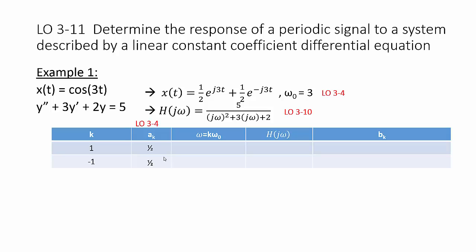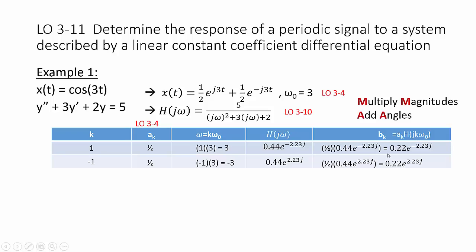This column is always through learning outcome 3.4. Our omega values are k times omega naught. We know our k values from the first column. We calculated omega naught using learning outcome 3.3, and usually it's listed in that same first step. We can calculate our h of j omega values for each of these omega values. And remember to put it into polar form with our exponents as radians. That's just substituting these omega values into our h of j omega. We can calculate our b sub k values that come from the product of a sub k and h of j k omega naught.